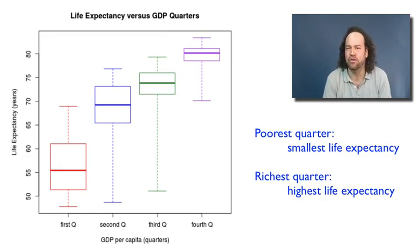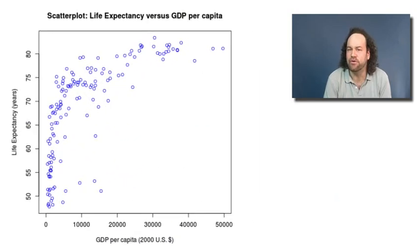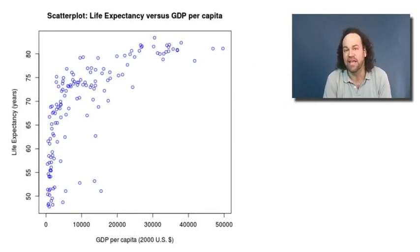But in a way, we haven't used the full information of the wealth variable — we've just divided all the countries into four different groupings. So what if we wanted to use the full quantitative variable of the wealth, the GDP per capita? Well, one thing we could do is produce a scatter plot, as shown here. In the scatter plot, each of the countries and territories gets a dot, where the horizontal axis illustrates the wealth — that is the GDP per capita — and the vertical axis illustrates the life expectancy.